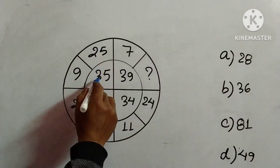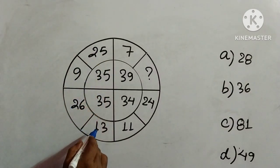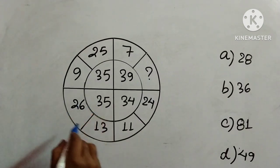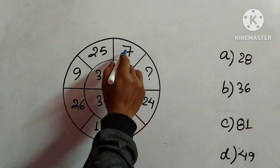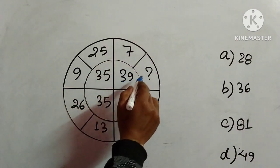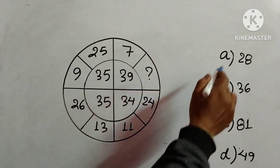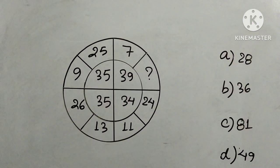In this figure, 9, 25, and 35 are given here. 13, 26, and 35 are given here. 11, 24, and 34 are given, and here 7 and 39 are given. We need to find out this number, and four options are given.